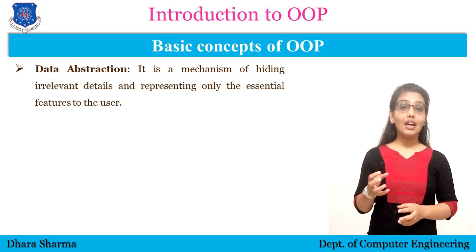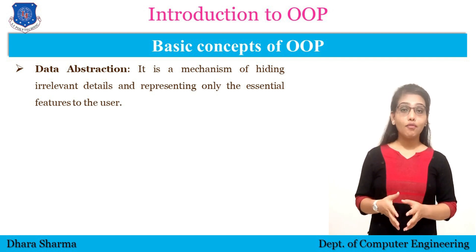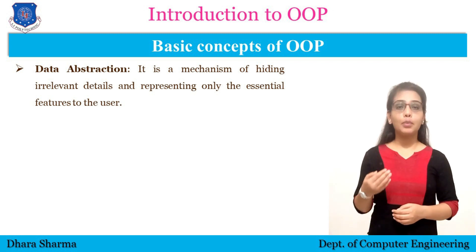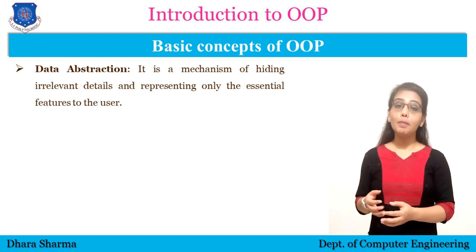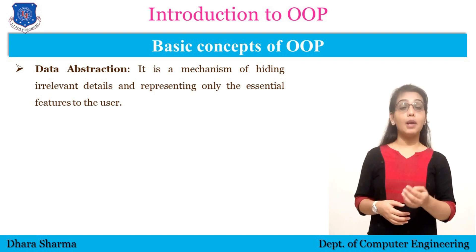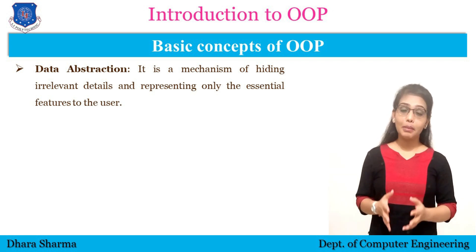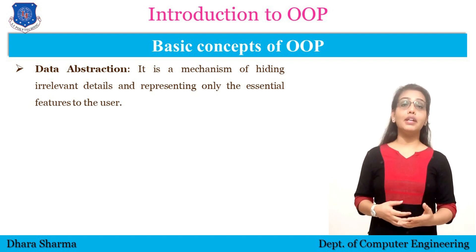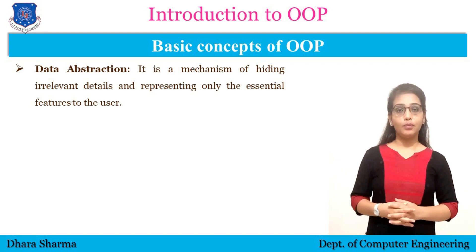But in object-oriented programming language, we write code having the concept of class and object. We write data and functions into the class. By default, the data defined in a class is private, which means private data cannot be accessed by any external function, including the main function. All the implementation details are written in the form of functions inside the class only.